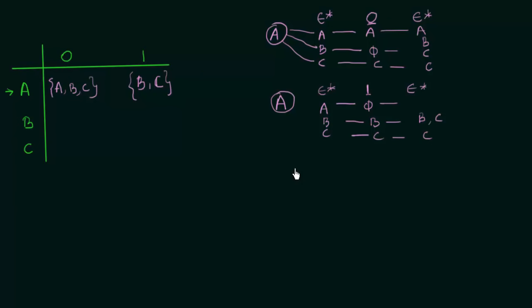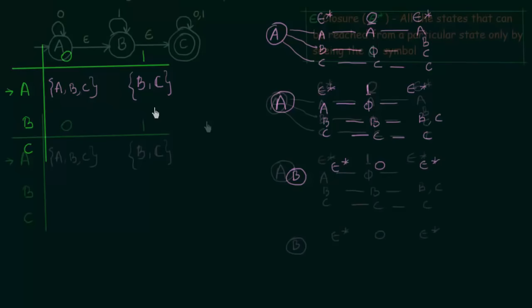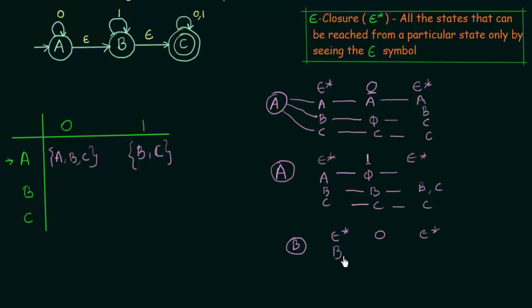Now let us do the same for state B. For B on input 0 — Epsilon Closure, then input 0, then Epsilon Closure again. B's Epsilon Closure is B and C. On input 0, B does not go anywhere — phi. C on input 0 goes to C itself. The Epsilon Closure of C is only C. So the final state obtained is only C. B on input 0 goes only to C.